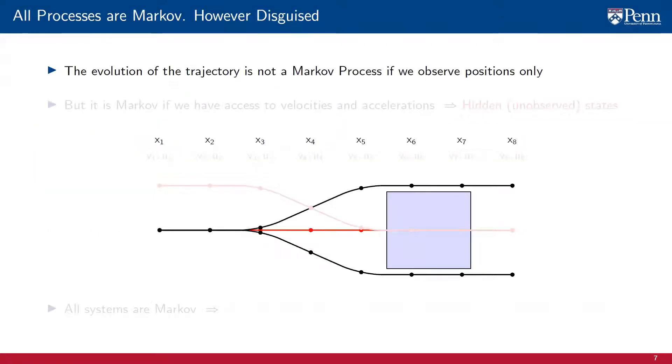We reconsider here the problem of predicting whether a particle will enter a forbidden region. We have already seen that when predicting the future of the trajectory is beneficial to know the whole past. We have also seen that the reason why this happens is because this process is not Markov.